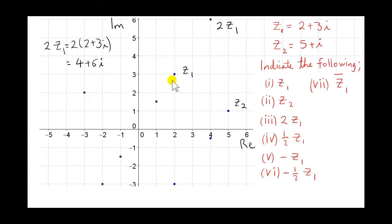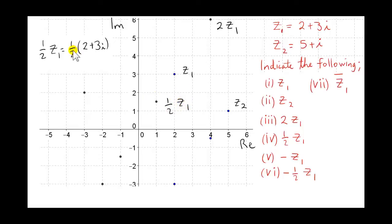What about a half z1? We draw a line from 0 to z1 and take half of it. Half of 2 is 1 and half of 3 is 1.5, so the real part of a half z1 is 1 and the imaginary part is 1.5.